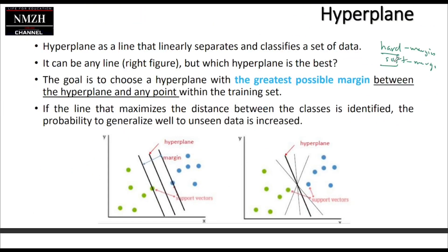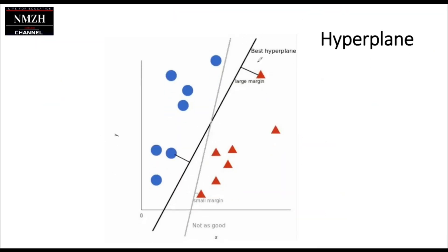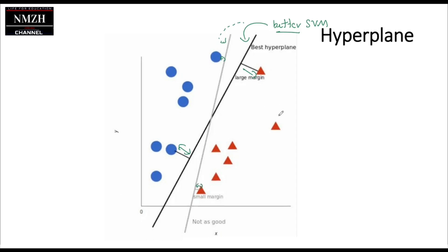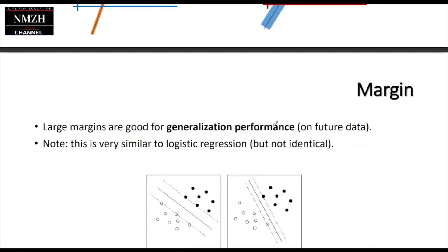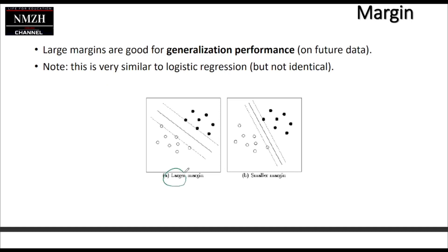If a line maximizes the distance between the classes, the probability of correctly generalizing to unseen data increases. The bigger the space or margin, the more optimal our hyperplane is considered. A large margin corresponds to hard margin and a small margin to soft margin. The larger the margin relative to the hyperplane, the better the SVM hyperplane performance.